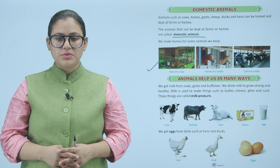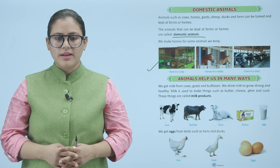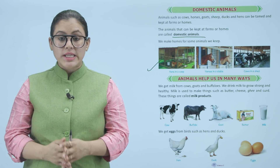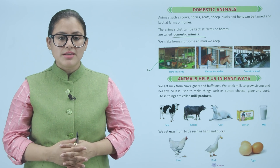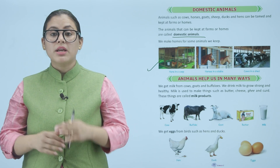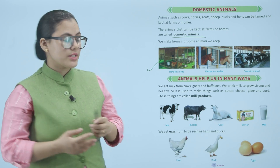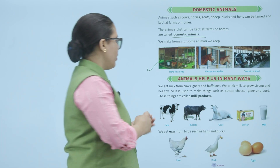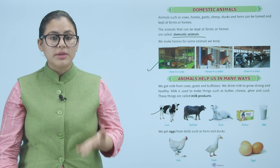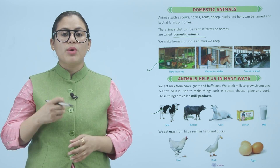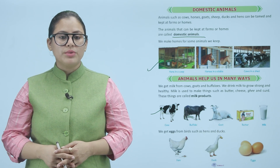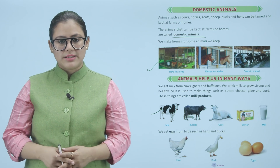We drink milk to grow strong and healthy. Milk is used to make things such as butter, cheese, ghee and curd. These things are called milk products. From animals we get milk, and from milk we make many different things.